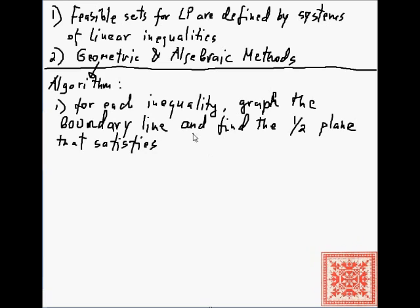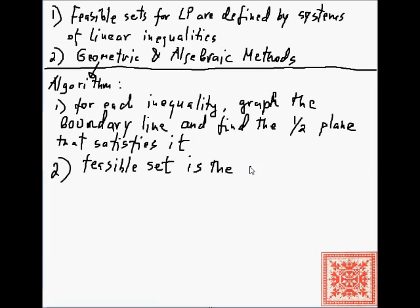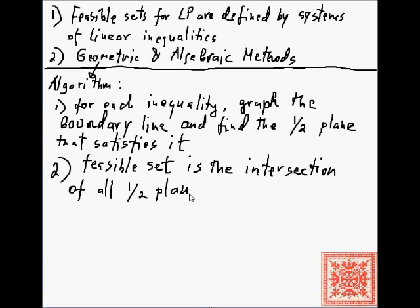Once we have graphed each boundary line and found the half plane that satisfies it, the feasible set — if there is one — is found by taking the intersection of all the half planes. That's the outline of the algorithm.